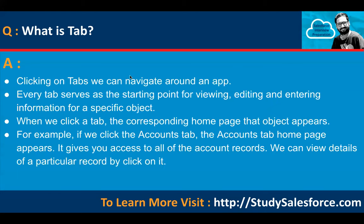What is a tab? By clicking on tabs we can navigate around an application. Every tab serves as a starting point for viewing, editing, and entering information for a specific object. Whenever you create any object, if you want to access that object from the front end, you need to create a tab; otherwise, you won't be able to access your object from the front end. When we click a tab, the corresponding home page for that object appears.